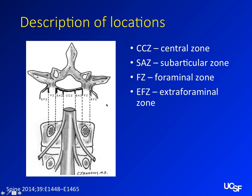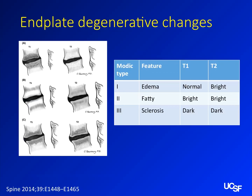Endplate degenerative changes — endplates can look awful. They can enhance and have a lot of abnormal signal just from degenerative disease. Mike Modic, a neuroradiologist at Cleveland Clinic, basically described these findings where endplates gradually change over time. Suffice it to say: you have edema first, then it becomes fatty, then it becomes sclerotic. Edema is bright on T2, fat tends to be bright on both sequences, and by the time it gets sclerotic, it's dark on both.